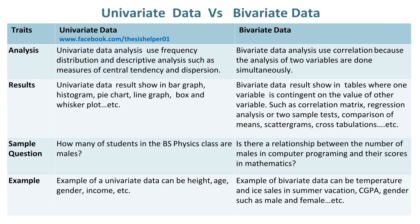Univariate Data analysis uses frequency distribution and descriptive analysis, such as measures of central tendency and dispersion. Whereas, Bivariate Data analysis uses correlation because the analysis of two variables is done simultaneously.